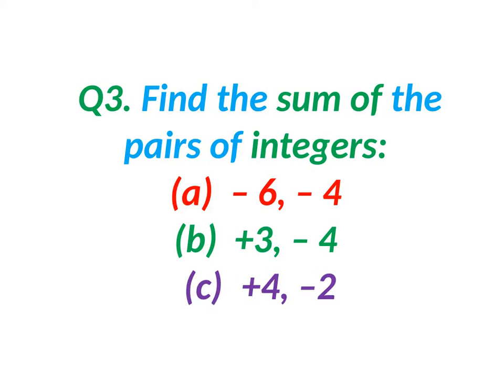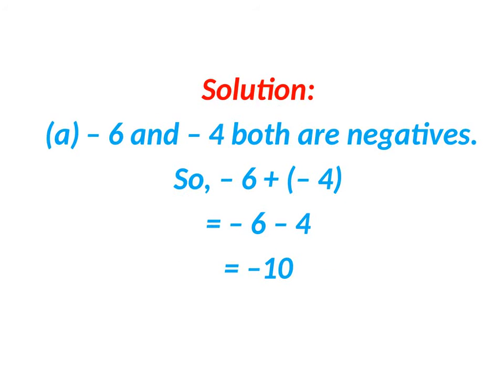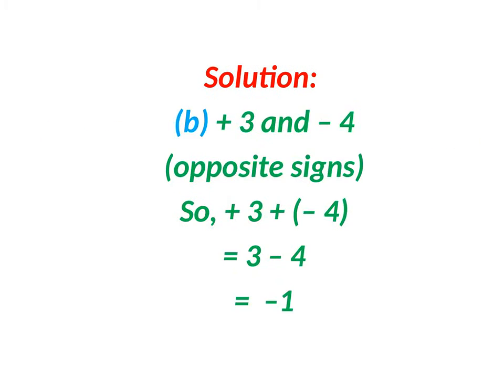Sum of integers. We need to add minus 6 and minus 4. When both are negative integers, we need to add the numbers and put the negative sign. 6 plus 4 is 10, and both are negative, so minus 6 plus minus 4 equals minus 10.